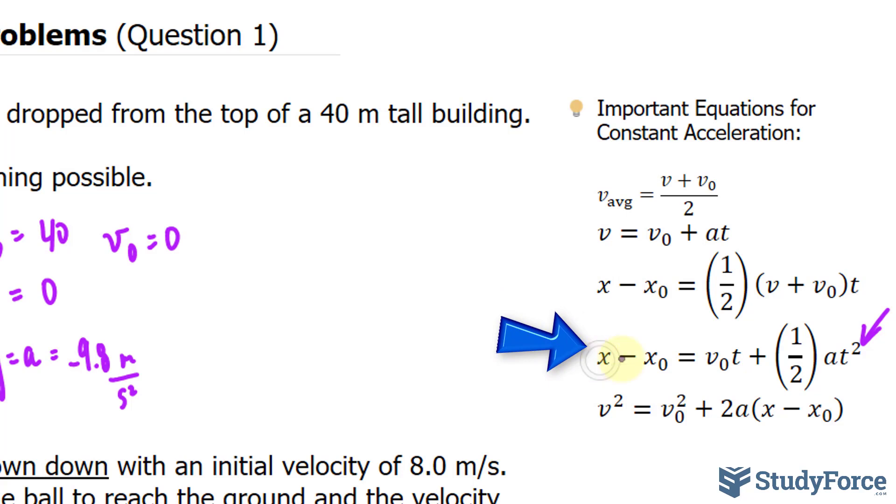So I know both of these values, I know x, that's the final, it's zero minus my initial of 40 is equal to zero times t, notice that that just cancels out, plus 0.5, the acceleration happens to be negative 9.8 and t is the unknown which is easily solvable. So subtract these two, I get negative 40 is equal to 0.5 times negative 9.8.